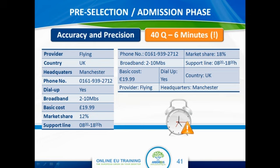Speed is crucial in accuracy tests — it is probably the test type where speed matters most. The only ways to speed up your performance are to practice a lot, make it routine, and also to learn some shortcuts: know what you're looking for, such as spelling mistakes, different digits in a phone number, or information that has been swapped.